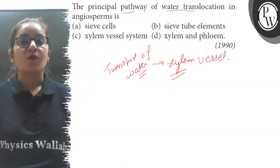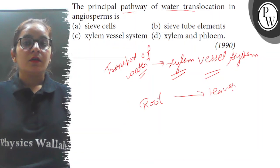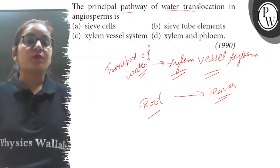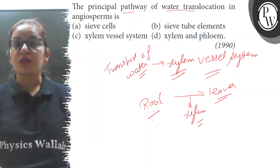So it is called the xylem vessel system that helps in transport of water from the roots up to the leaves. The water absorbed by the plants through roots is transported to the leaves via xylem tissue. Option A: sieve cells.